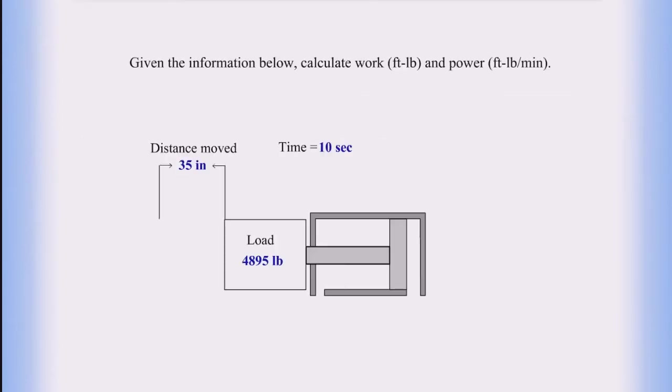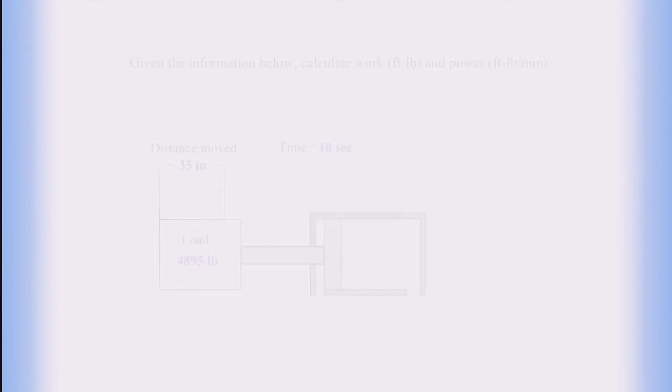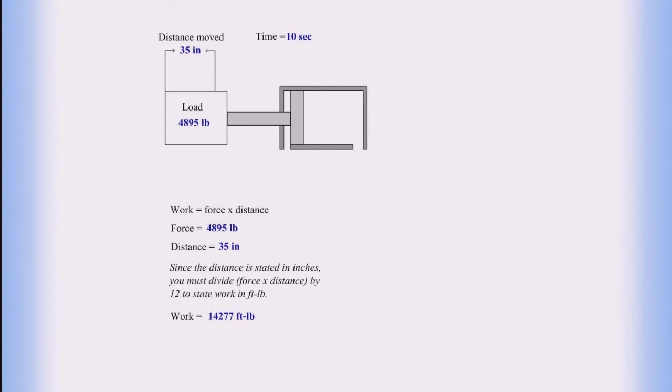Given the information below, how would we calculate work and power? Work equals force times distance. Force equals 4,895 pounds and distance equals 35 inches. Since the distance is stated in inches, you must divide by 12 to state work in foot-pounds. So work equals 14,277 foot-pounds.